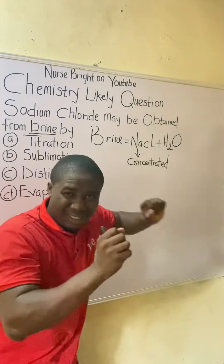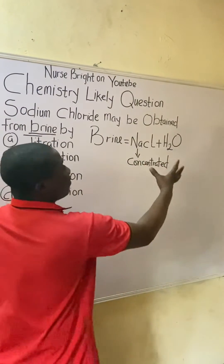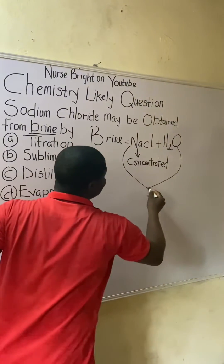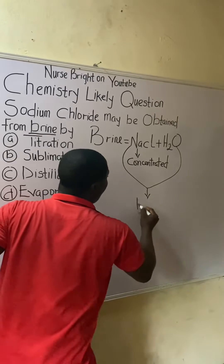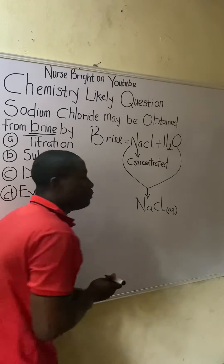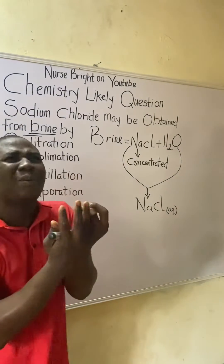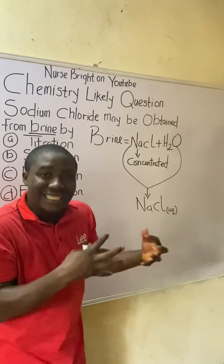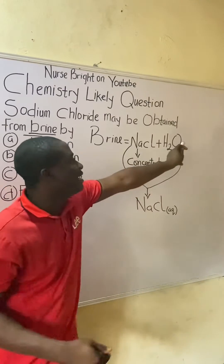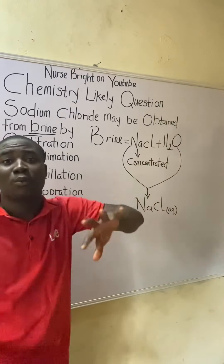Both sodium chloride and water are already mixed together. When mixed, we get sodium chloride (aq) — the 'aq' notation means the compound is dissolved in water. So the question is: how do we separate sodium chloride from brine?